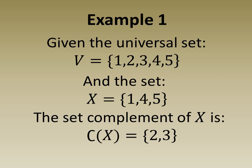In Example 1, we see that the universal set is the first 5 positive integers and the set X is comprised of 1, 4, and 5. The complement of X is a set comprised of 2 and 3.